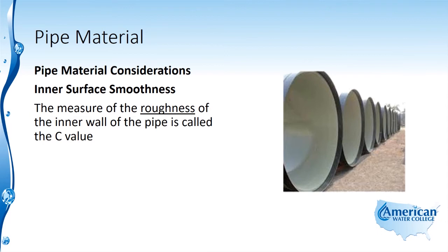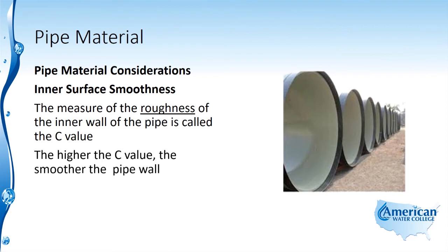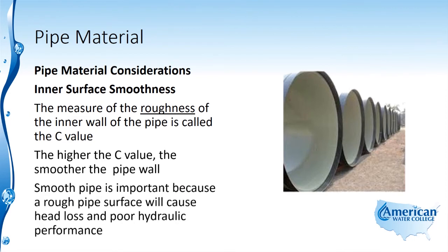The measure of the roughness of the inner wall of the pipe is called the C value. The higher the C value, the smoother the pipe wall. Smooth pipe is important because a rough pipe surface will cause head loss and poor hydraulic performance.